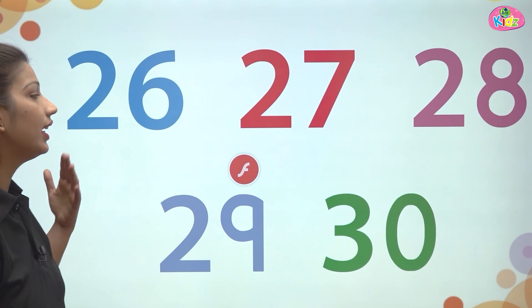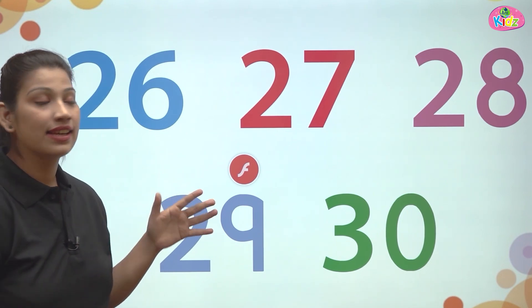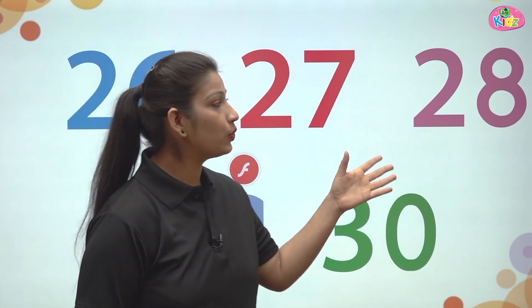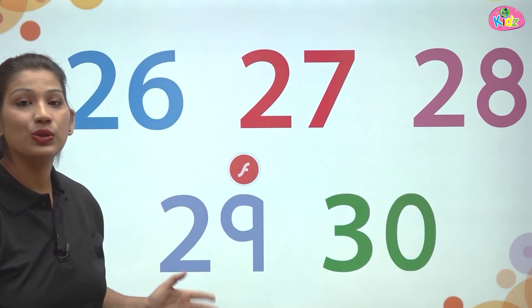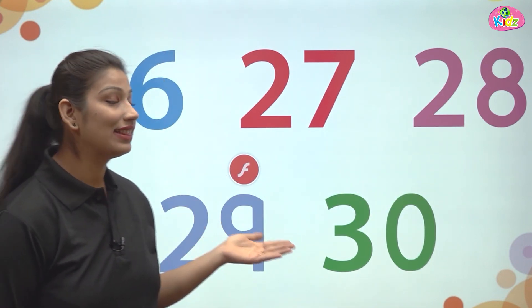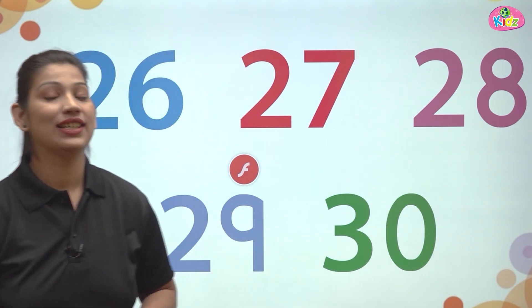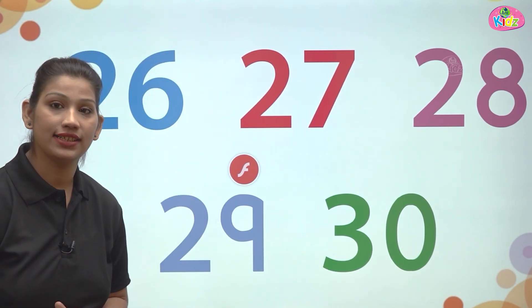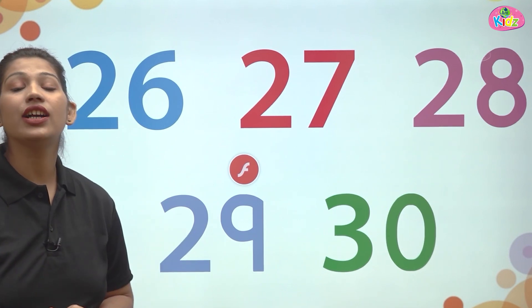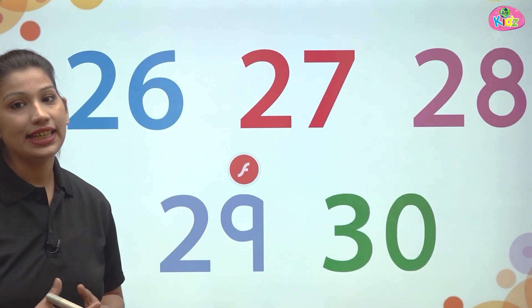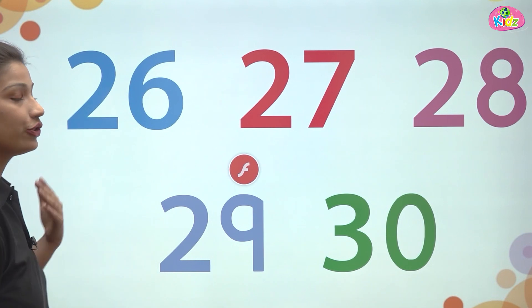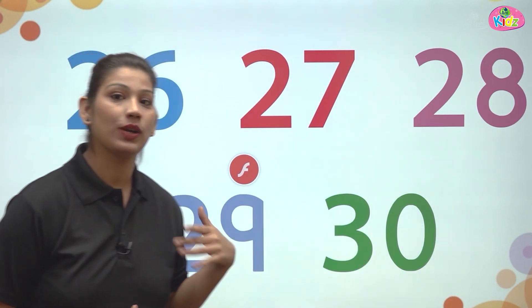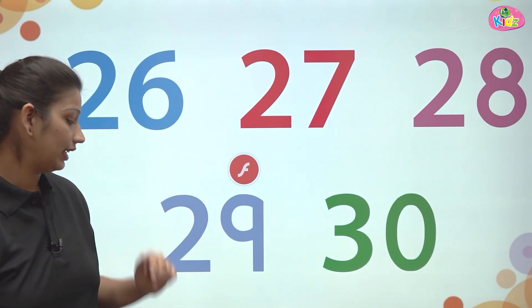After 25 comes 26, then 27, 28, 29, and 30. After 29 the number that comes is 30. All of these are two-digit numbers — 26, 27, 28, 29, and 30.